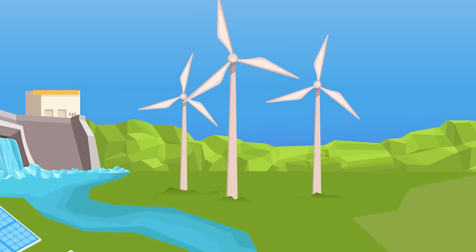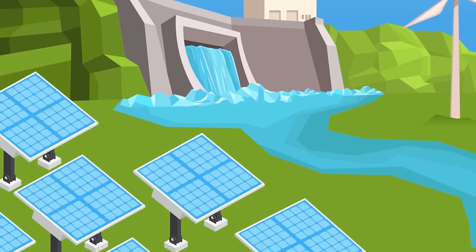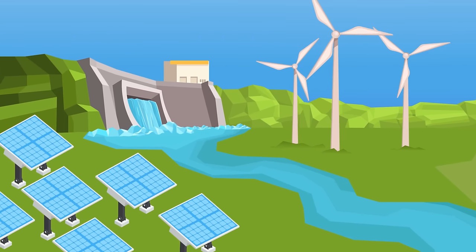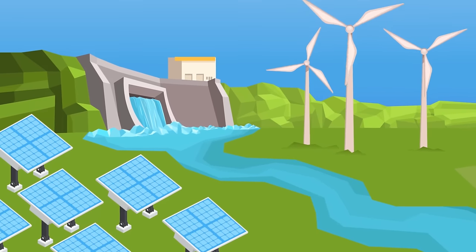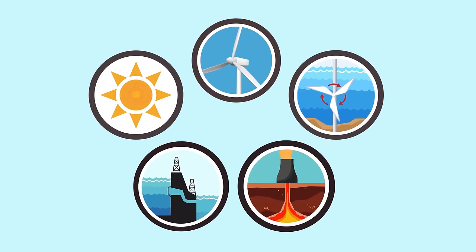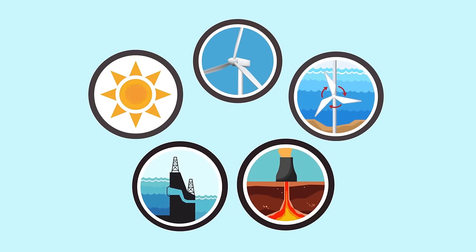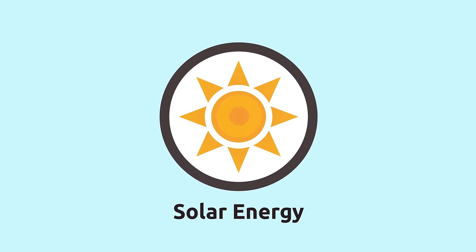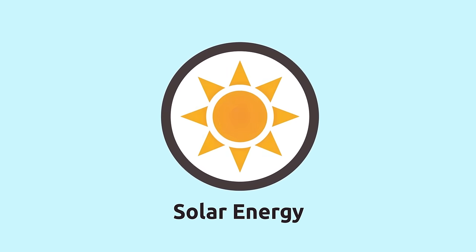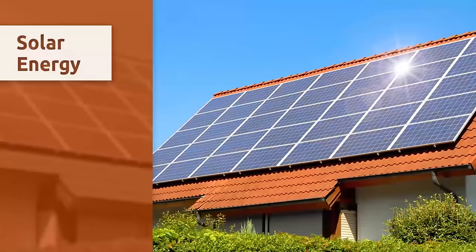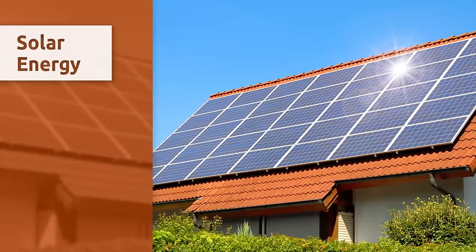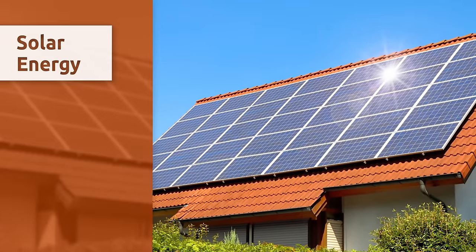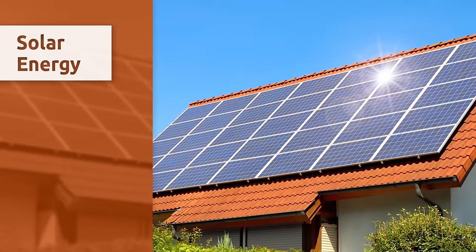These energy sources are present in nature and are naturally replenished — that's why they never run out. Solar energy comes from the sun and reaches us as light and heat. For example, thanks to solar panels, we can capture sunlight energy and transform it into thermal energy to heat water in a house.